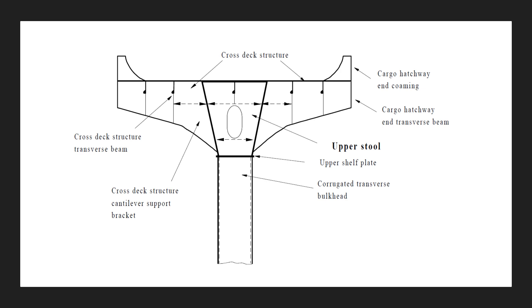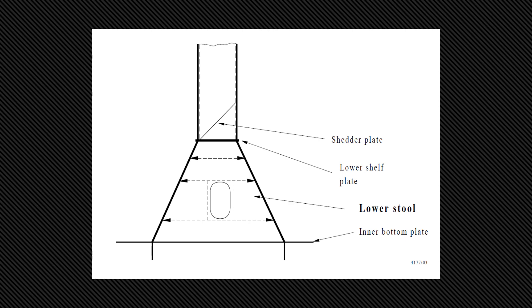These main structural members provide the transverse strength of the ship to prevent the hull section from distorting under any kind of load. In addition, if ingress of water into any one of the holds occurs, the transverse watertight bulkheads are the ones that prevent any kind of progressive flooding into the other holds. A typical corrugated transverse watertight bulkhead cross section is shown on screen.